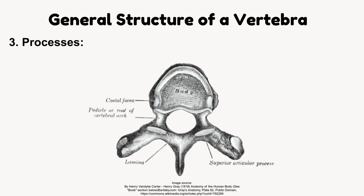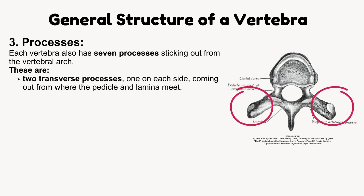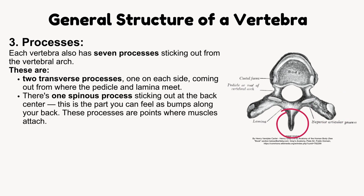Processes of vertebrae. Each vertebra has seven processes sticking out from the vertebral arch. These are two transverse processes, one on each side, coming out from where the pedicle and lamina meet. There is one spinous process sticking out at the back center — this is the part you can feel as bumps along your back.